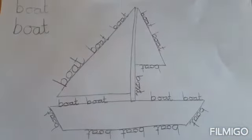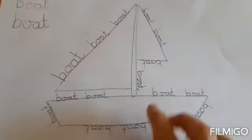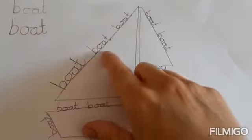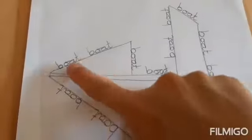So as you can see, I have now written the word boat all the way round the outside. Now I have to turn my paper as I was writing it to make sure I follow the lines. So here look, I turn the paper, turn the paper again.